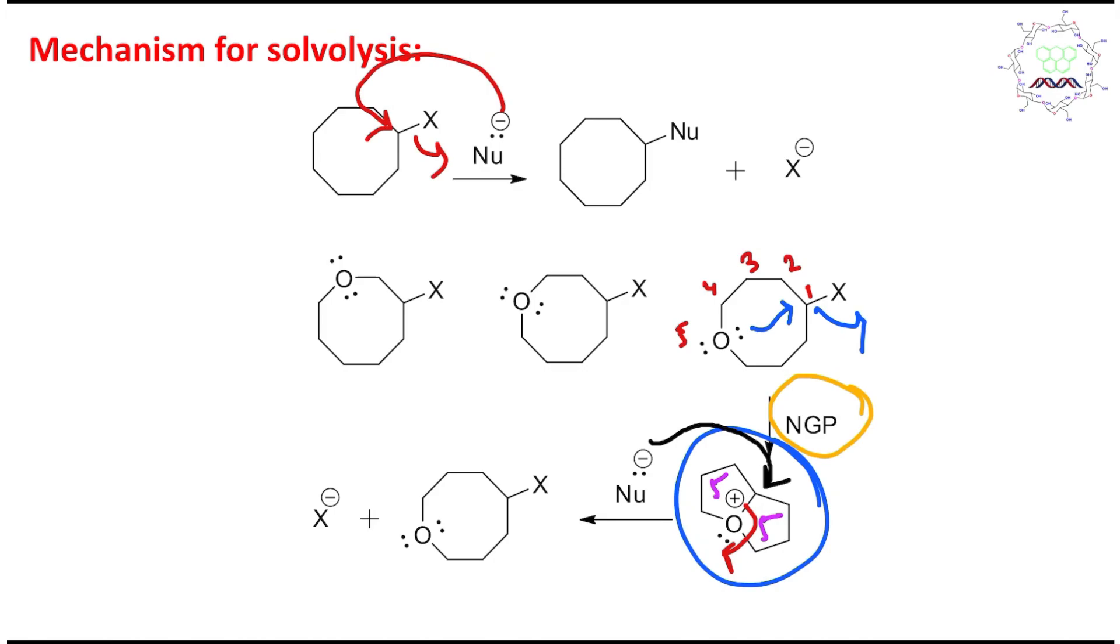And ultimately what it will produce? That is, X is substituted - no, sorry, this will not be X, this will be nucleophile. This will be nucleophile and this is the X because X already left in this first case. It was X minus. So in this way reaction will happen.